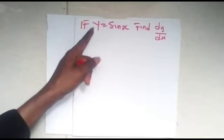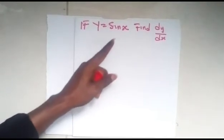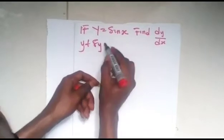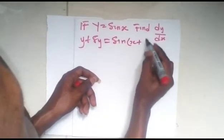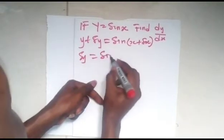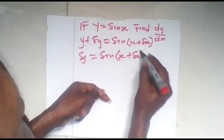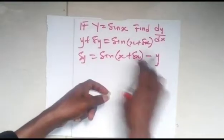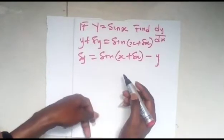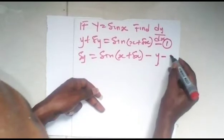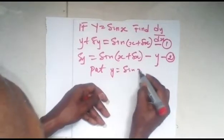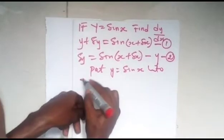It states that when there is an increment in the variable y, there will be a corresponding increment in the variable x. So from here, if y is experiencing a small change in y, x also will experience a small change. From this we have that y plus δy equals sin(x + δx) minus y, and we already know from the question that y equals sin x. So let's say this is equation 1 and this is equation 2.